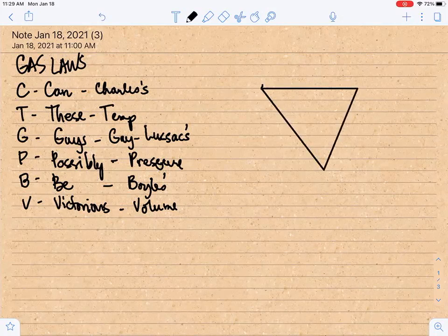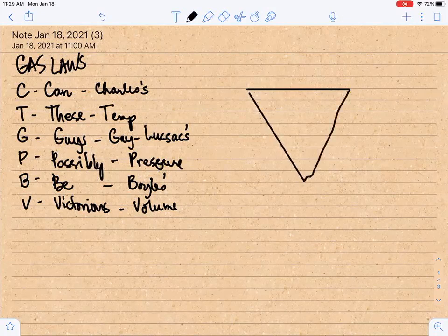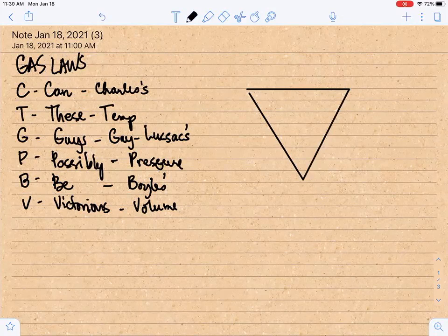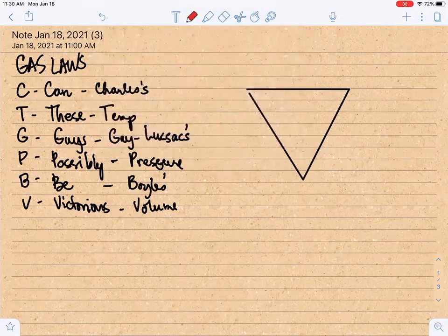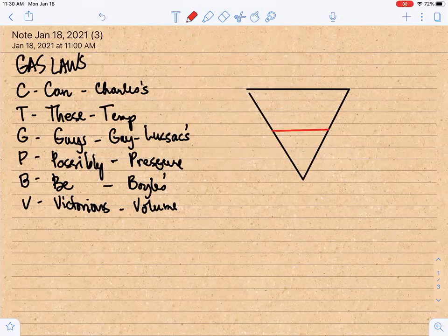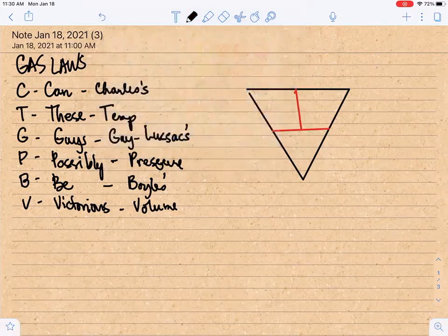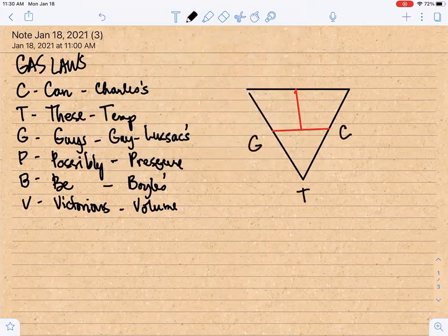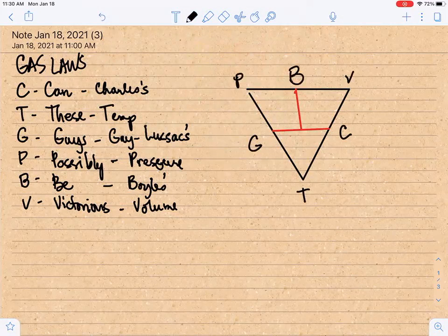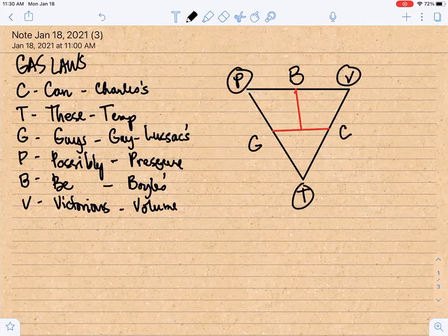Now let me erase the frame first. So we have here an inverted triangle, and then we will divide the inverted triangle into three parts. So we will use a line - this line represents division. Then we'll be using a vertical line, this will represent multiplication. Then we will assign the letters. Can these guys possibly be victorious, and we will put all those variables in the inverted triangle. So this is P, we write here V, and we write here T.